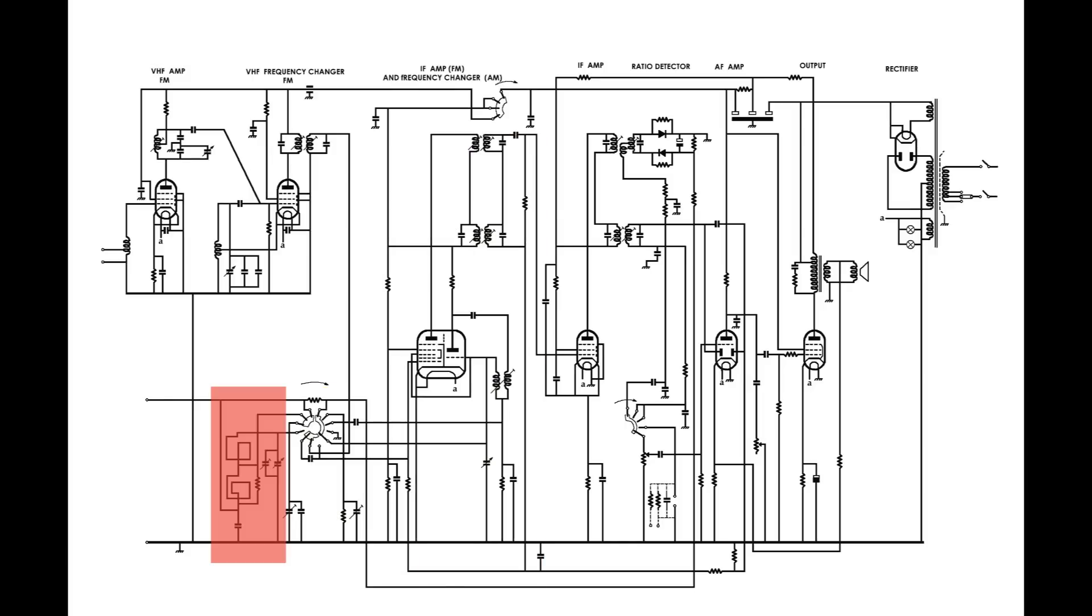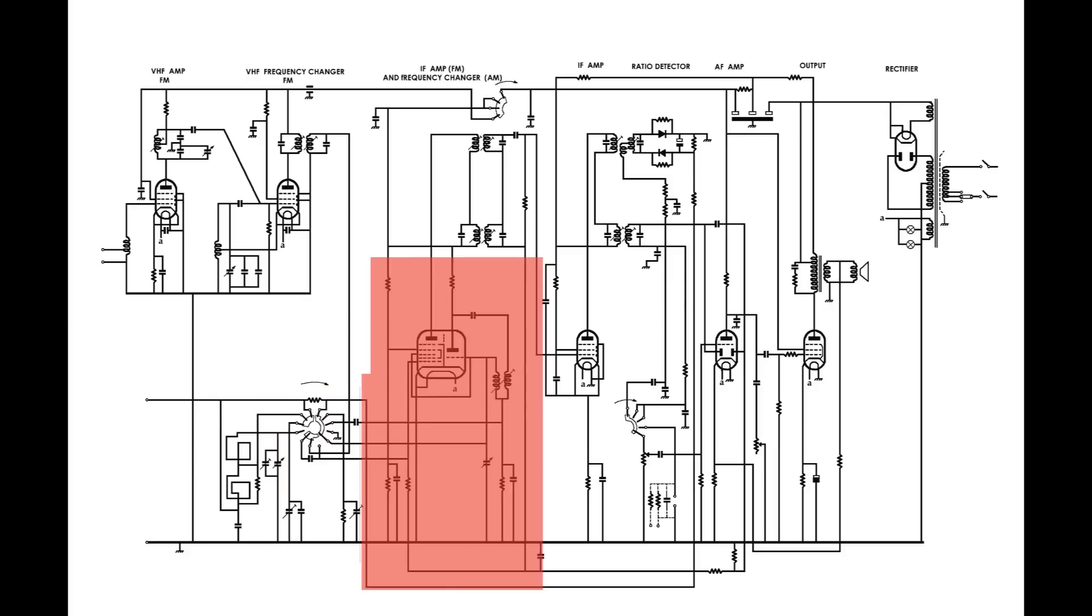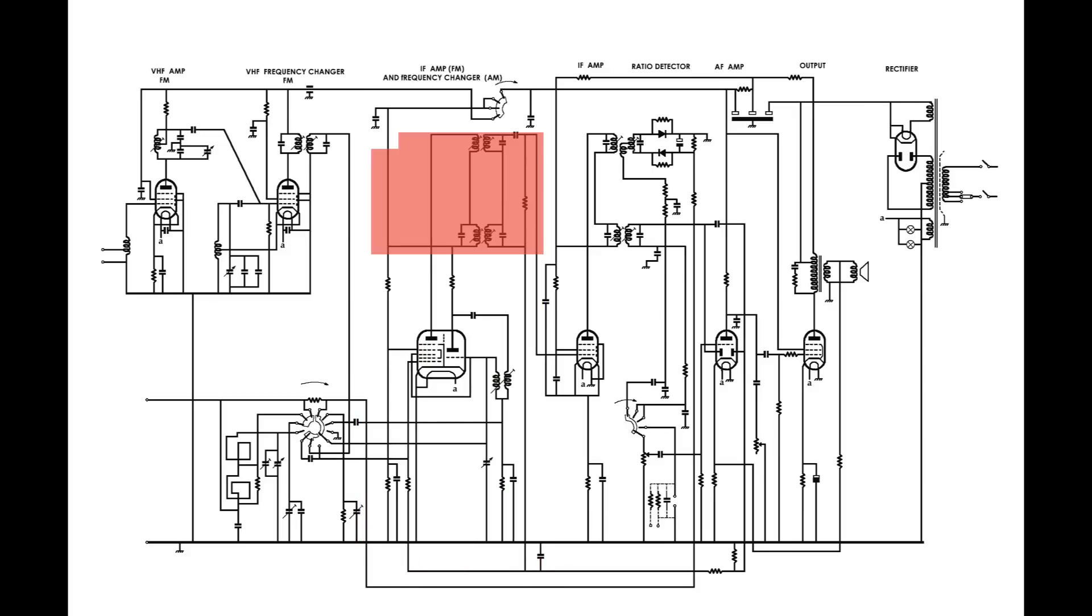And that includes the internal frame aerials for medium wave and long wave, the wave change switch, V3 which is the IF amplifier for the MF section and it also acts as a frequency changer for the AM frequency range, and finally the two IF transformers.